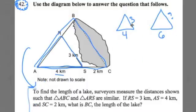All right, we have the question. Before I set up the proportion, let's just read over the question. It says, to find the length of a lake, surveyors measure the distances shown such that triangle ABC and triangle ARS are similar. That's pretty much what I was able to figure out just by looking at the diagram closely. I'll read on. If RS is equal to three kilometers, AS is equal to four kilometers, and SC is equal to two kilometers, what is BC, the length of the lake? Which is this missing shape here.